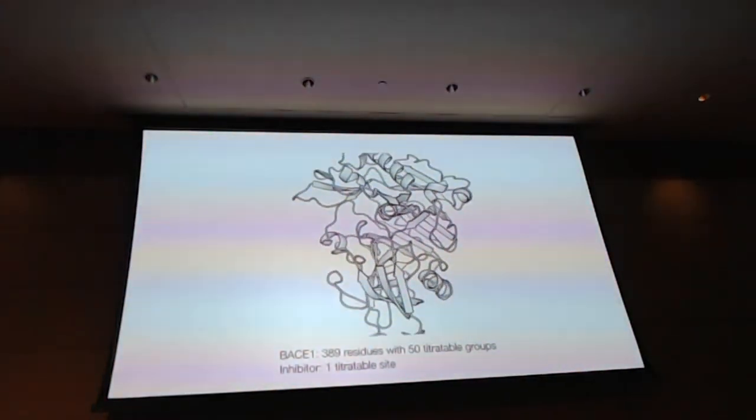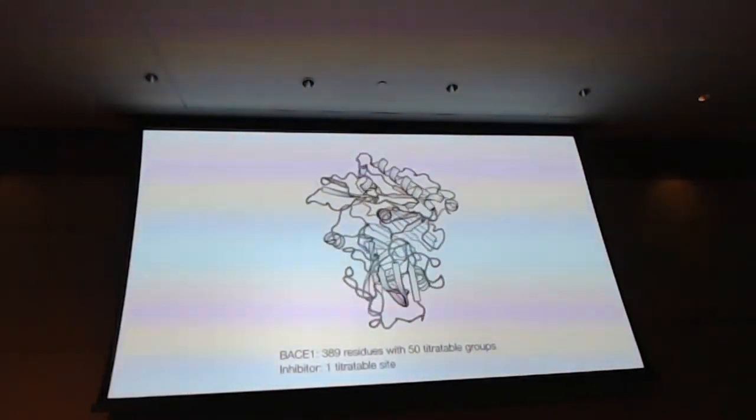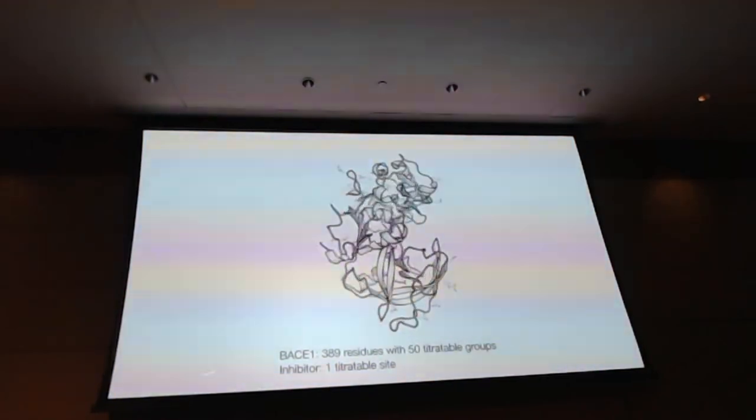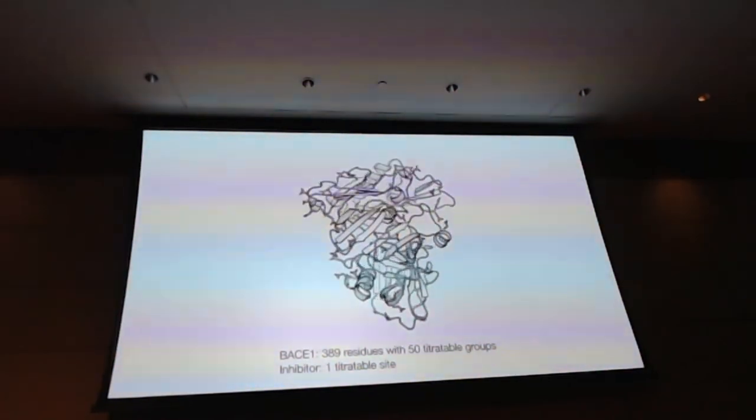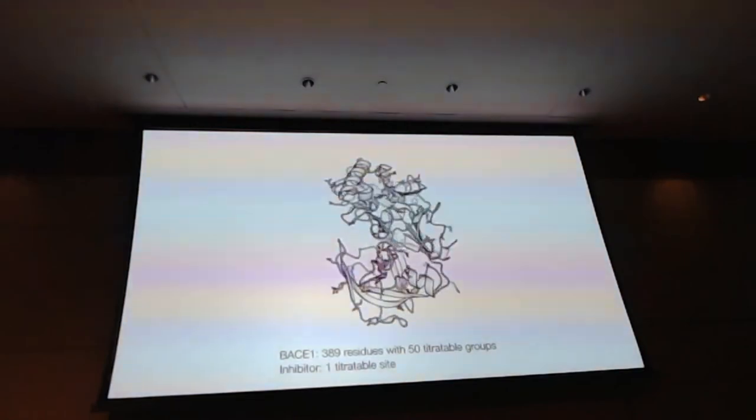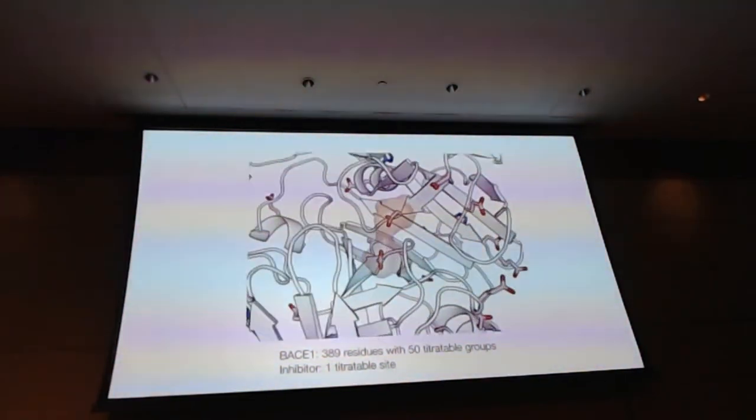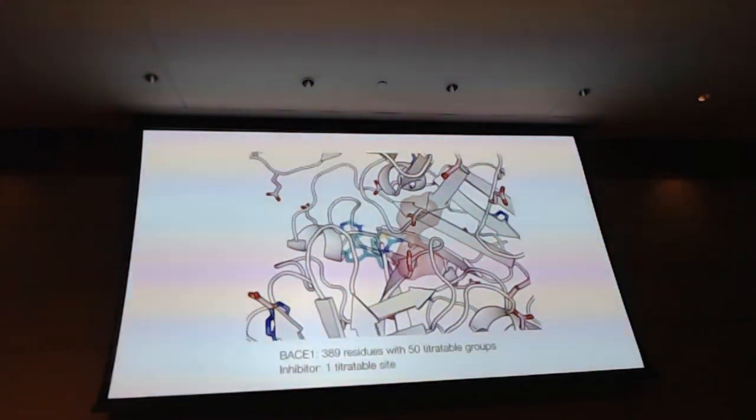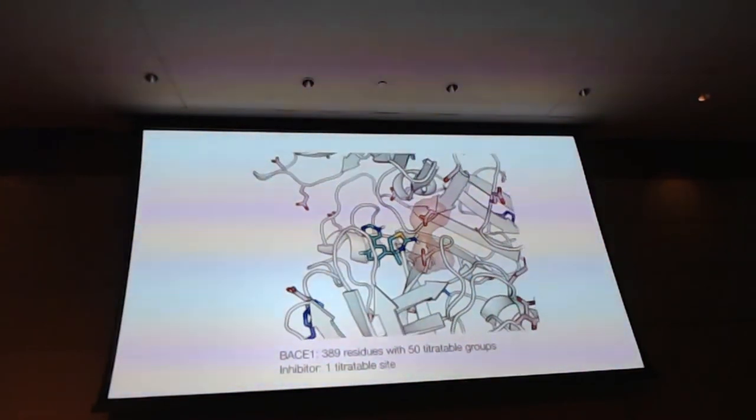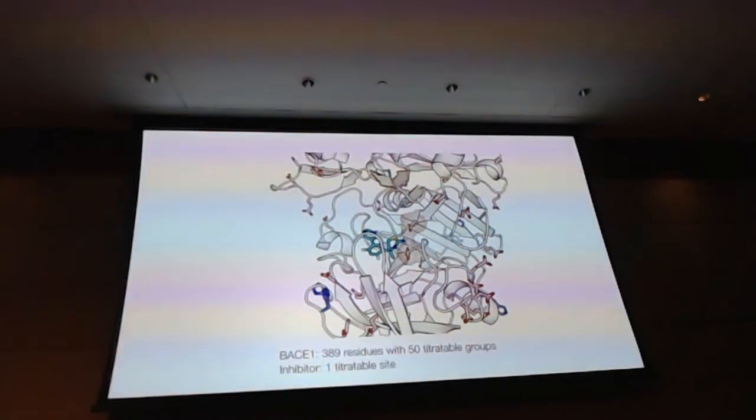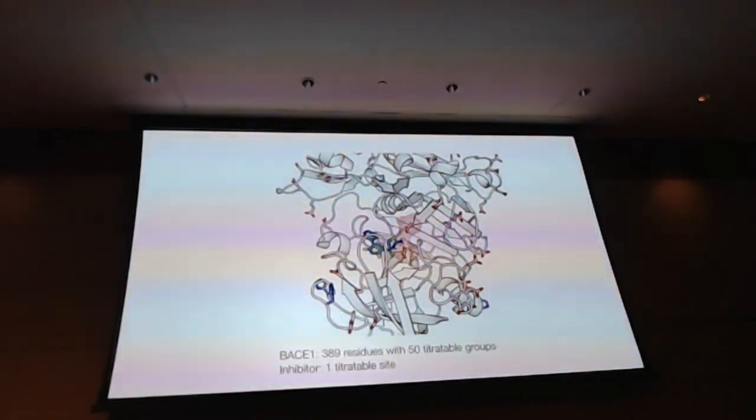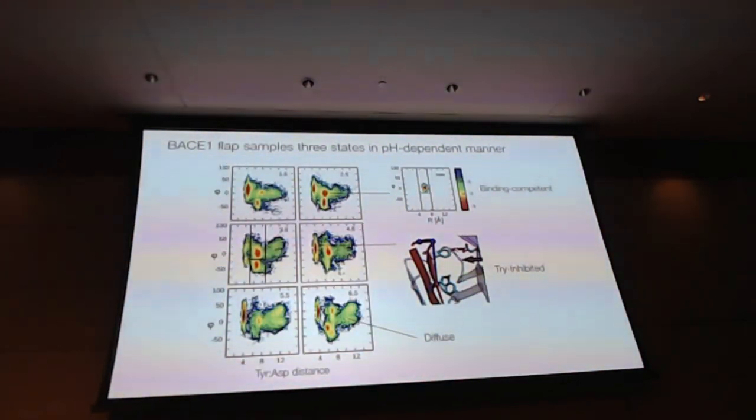All right. So much do we know about the system experimentally. Now we're going to do the constant pH-MD simulations. So here's the system. We have a protease containing about 400 residues. We're going to, just for this academic exercise, we're going to titrate all the aspartic residues, glutamic residues, as well as histidines. And in practice, for industrial application, we do not need to do that. It's just for us to exercise. And we also have an inhibitor. We're going to titrate one site on the inhibitor. I will show you in a little bit which site. But let's first take a look at apo state dynamics of BACE1.